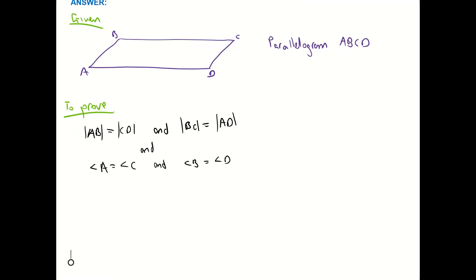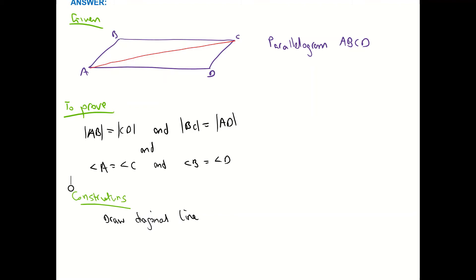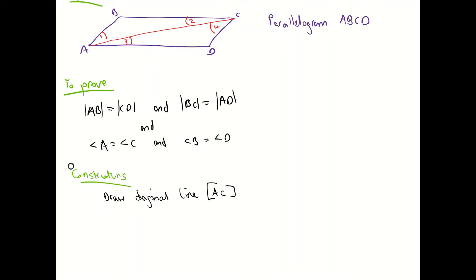We're going to label our constructions. Our constructions are basically just marking on our diagram some of our angles. But the first thing we're going to do is draw in a diagonal line from A to C — you can go from B to D if you want, but I'm going to go this way. So draw diagonal line from A to C. Then we're going to label all those interior angles: we call them 1, 2, 3, and 4. Mark in angles 1, 2, 3, and 4.